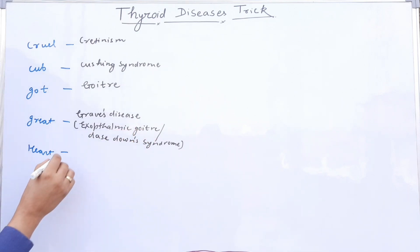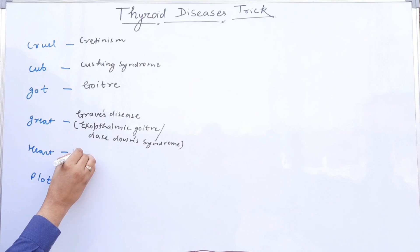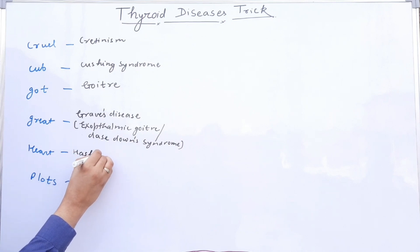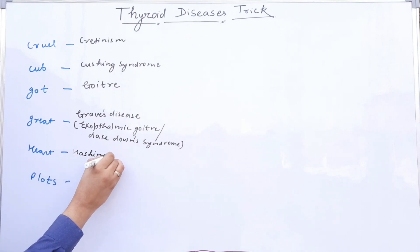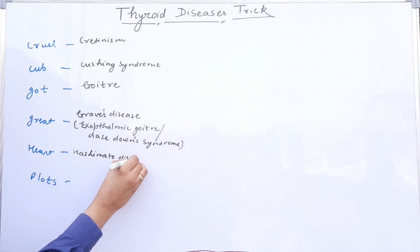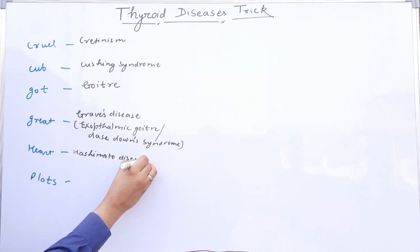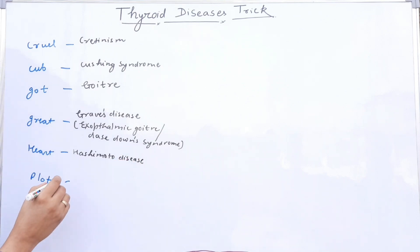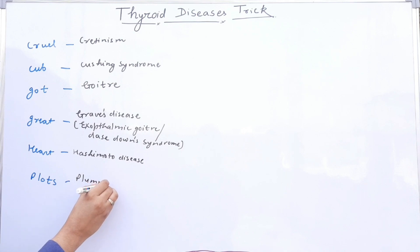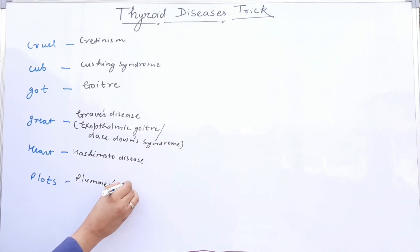Heart stands for Hashimoto disease, and Plots stands for Plummer's disease.